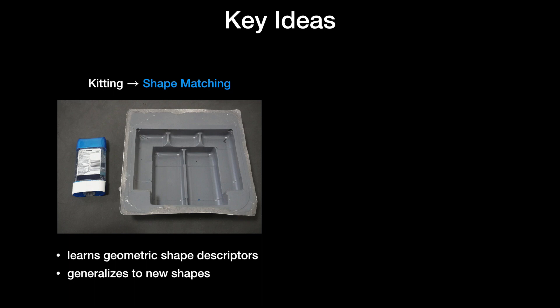Form2Fit is based on two key ideas. One, it learns geometric correspondences between object surfaces and their target placement locations using self-supervised dense visual correspondence training.